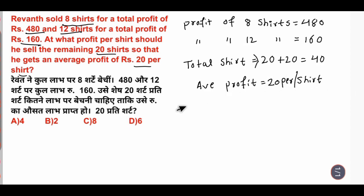Average profit, we will remove total profit. Total profit, how much of my total profit is? 40 into 20, 40 into 20, 4 to 2, 0, 8 over 2, 0.